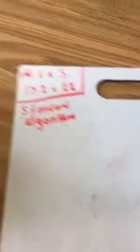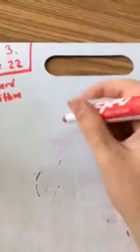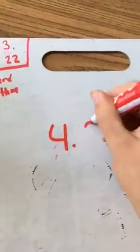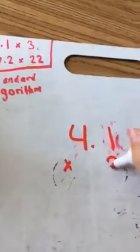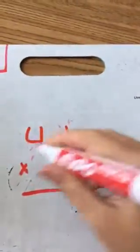Okay, so let's try 4.1 times 3. So 4.1 times 3. So I need to make sure it's set up like that, everything's in the right place value.